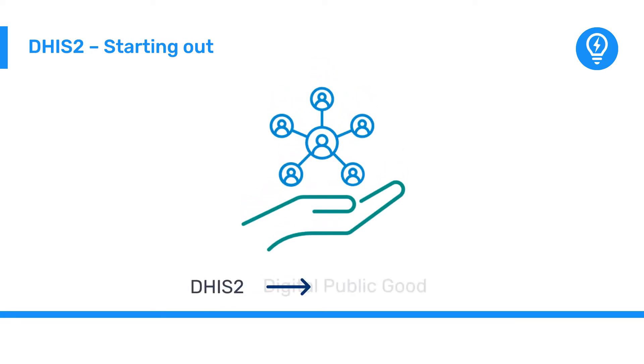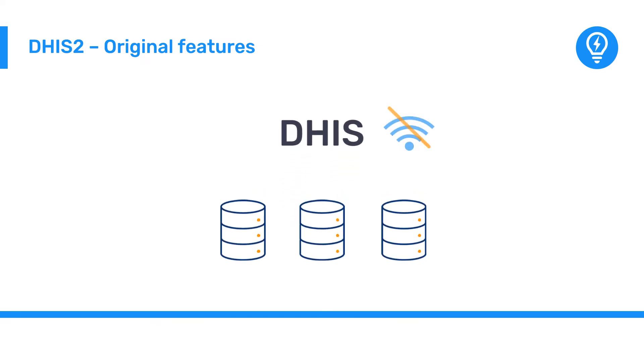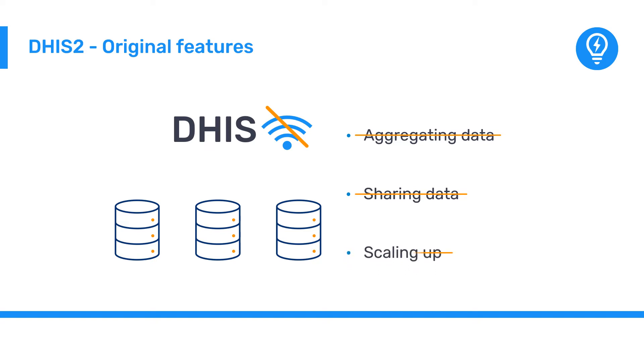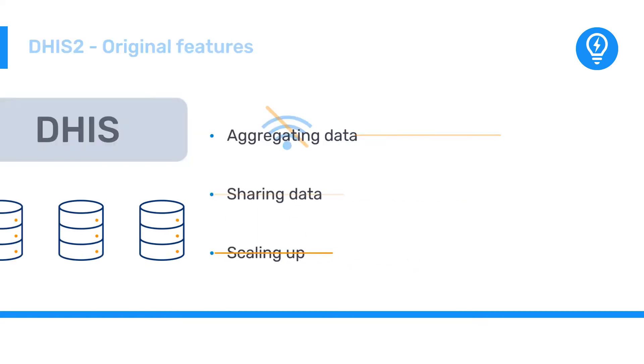To that end, we share our software, DHIS-2, globally as a digital public good. The original DHIS software functioned using local, offline databases, but this resulted in challenges in aggregating and sharing data, as well as scaling up implementations over time. As a result, in 2004, development of a web-based DHIS-2 began at the University of Oslo.